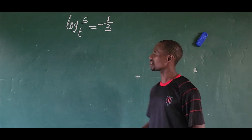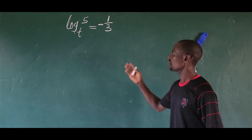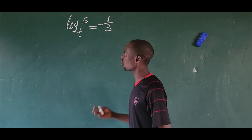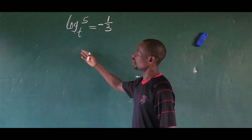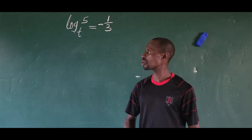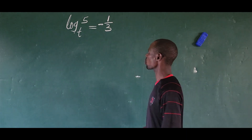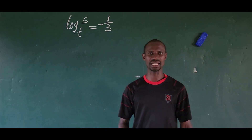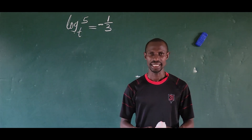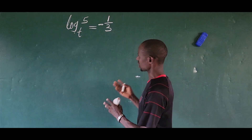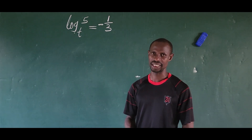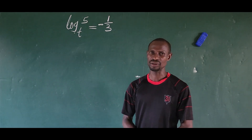Hello people, welcome to today's class. Here we have a logarithmic equation. The question is: log 5 base t equal to minus 1 over 3. What is the value of t in this expression? We are looking for the value of t.